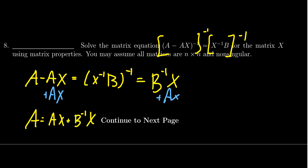I can then factor out the X on the right-hand side. So we're going to get (A + B^(-1)) times X is equal to A.